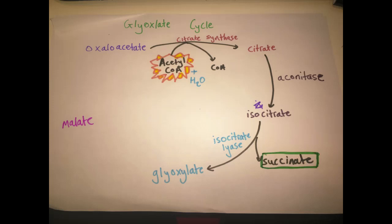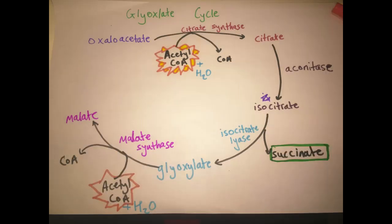Glyoxylate is then bound with another molecule of acetyl-CoA and water to give a molecule of malate. This is catalyzed by the enzyme malate synthase.